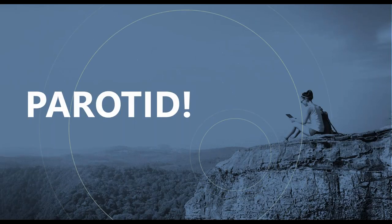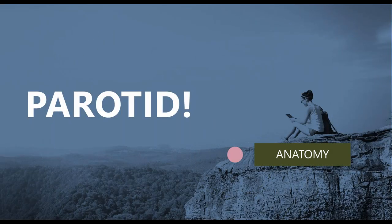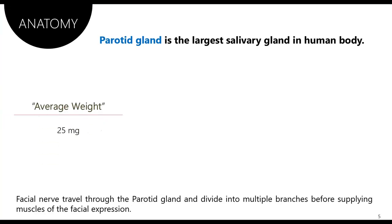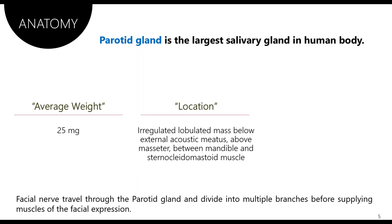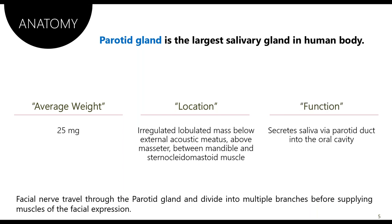First, we'll talk about the anatomy of the parotid gland. In order to do any type of monitoring, we have to start with the anatomy, then pathology, function, and then the neuromonitoring technique. The parotid gland is the largest salivary gland in the human body, weighing about 25 grams. It is an irregular lobulated mass located below the external acoustic meatus, above the masseter, and between the mandible and the sternocleidomastoid muscle.